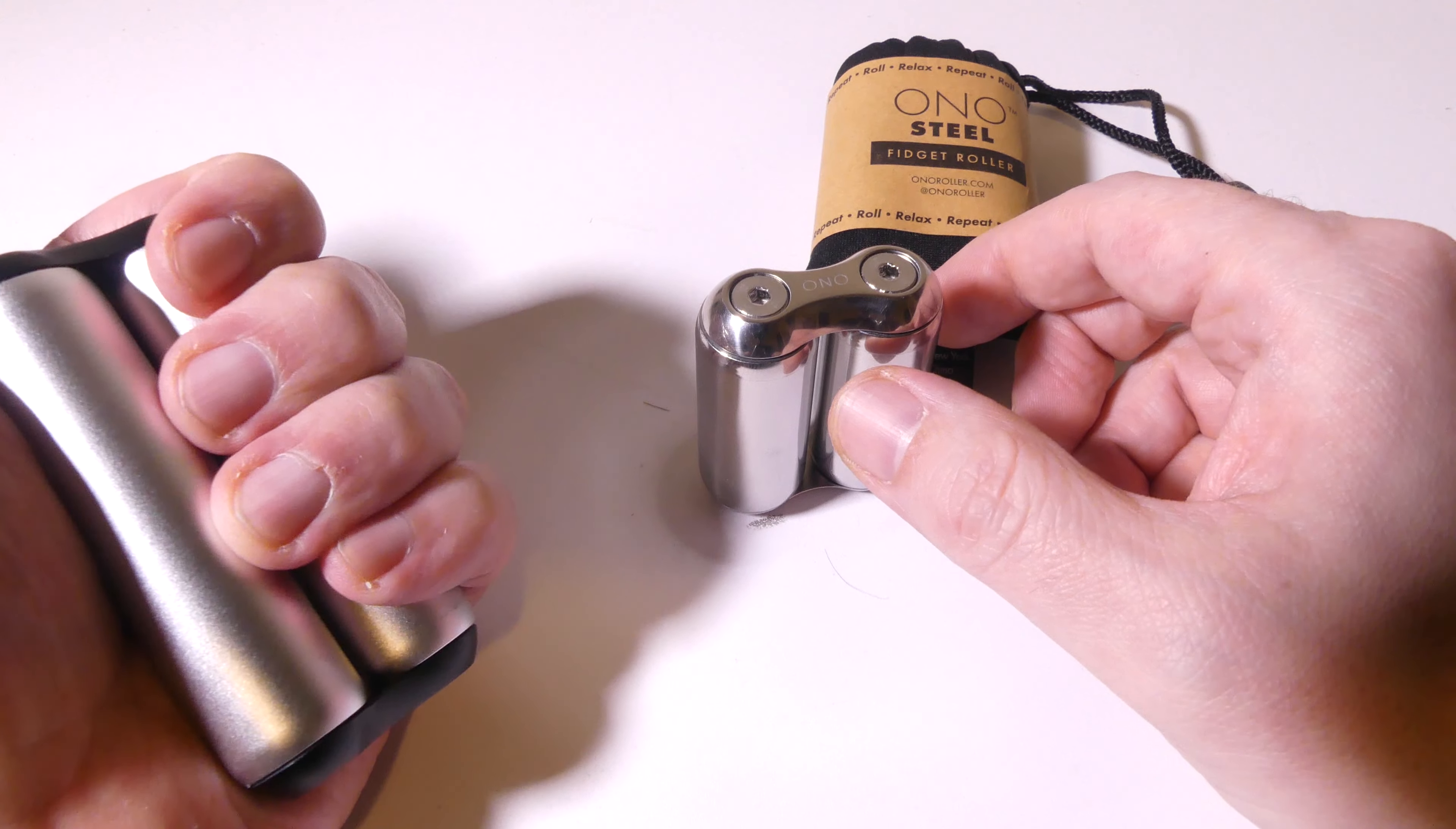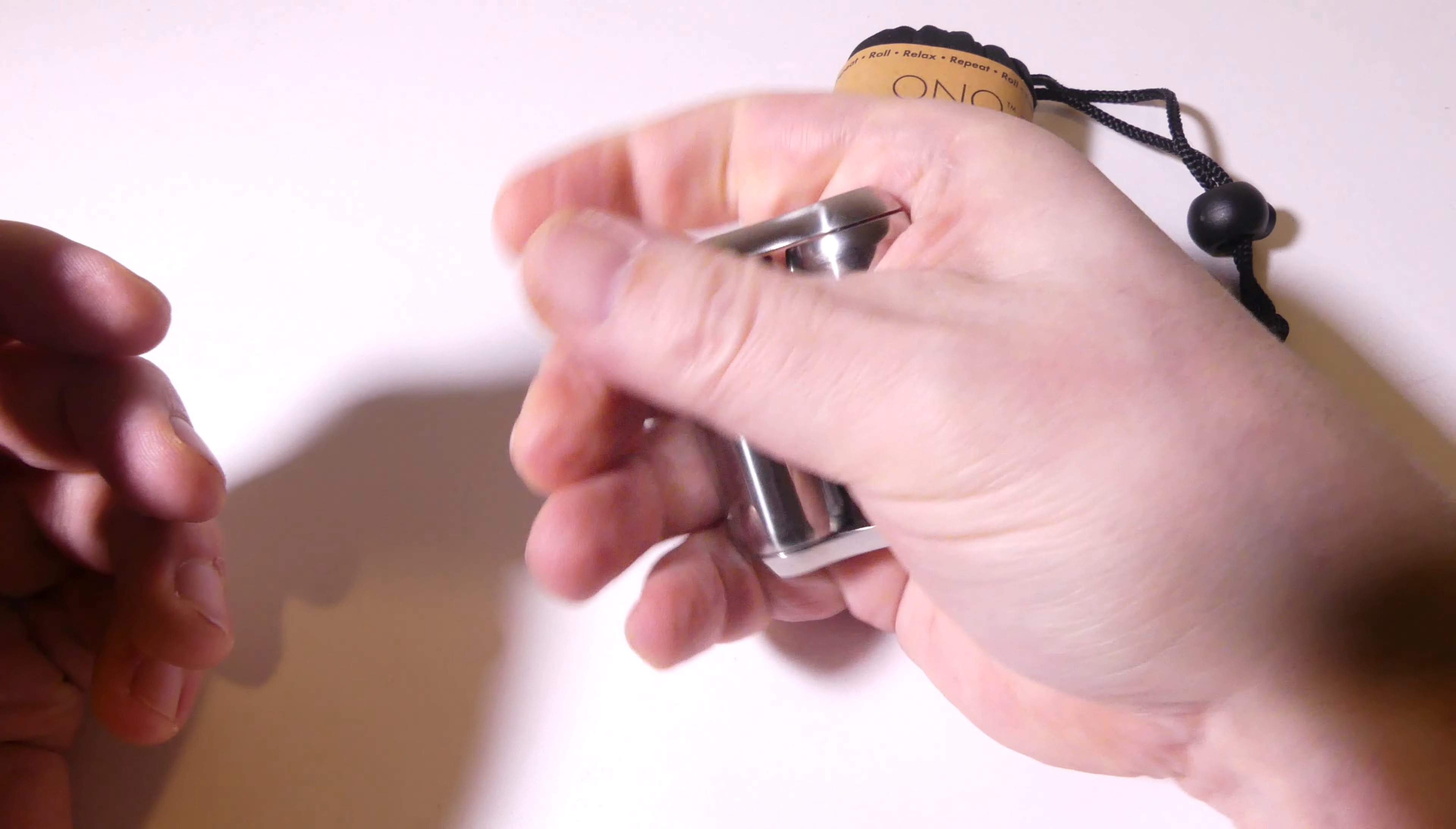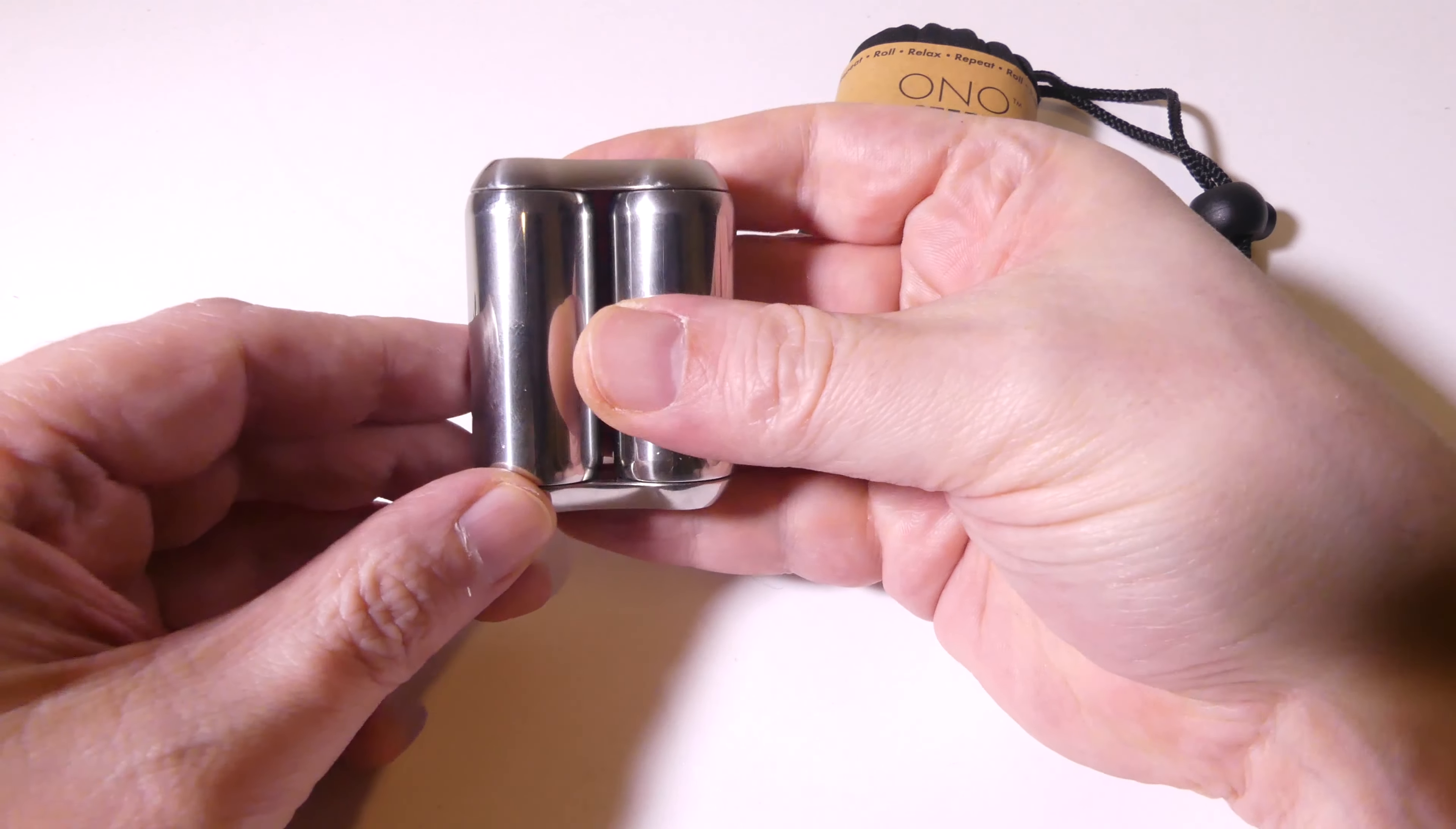So, if you are looking for a fidget roller and you want something a little bit more small and discreet, the Ono Steel Mini definitely fits that bill. You can see that the original one on the left there fills up my entire palm and almost overlaps. This one is kind of encompassed by my hand.